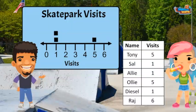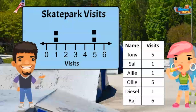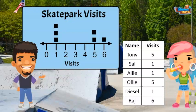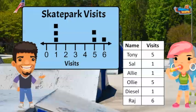Ali visited five times, so I will put another dot above the five. Diesel only visited once — another dot above the one. Finally, Raj visited six times, so the data point will go above the six. You've got it, Tony!